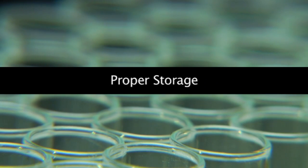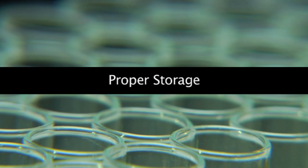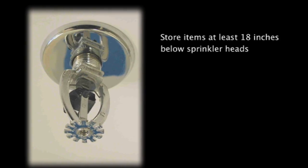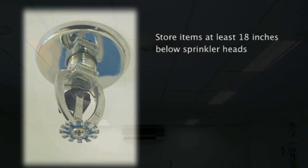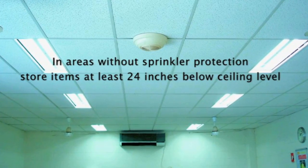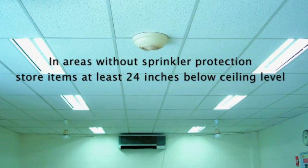Care must be taken when storing even non-chemical items. In areas with sprinkler protection, store items at least 18 inches below the level of the fire sprinkler heads. In those areas without sprinkler protection, store items at least 24 inches below the level of the ceiling.